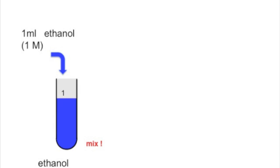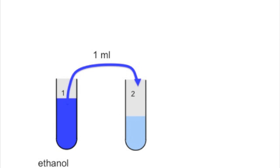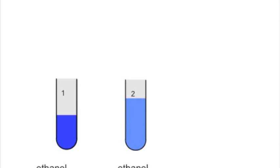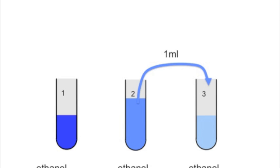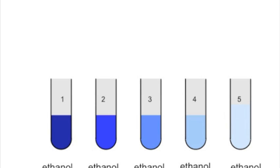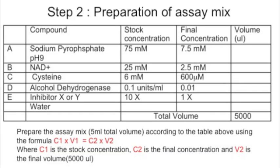Then you'll mix well and take one ml from this tube and pipette it to tube number two, creating a dilution from 500 millimolar ethanol to 250 millimolar ethanol. You repeat this for tubes three, four, and all the way to tube five, so you'll have all the different concentrations.